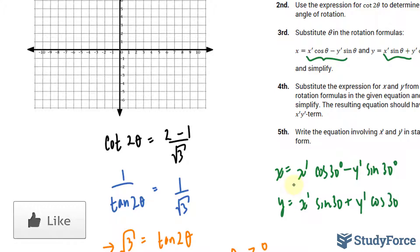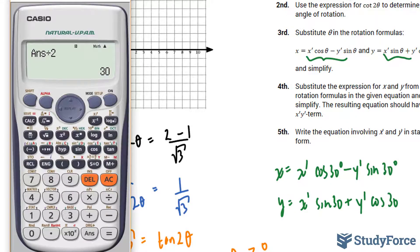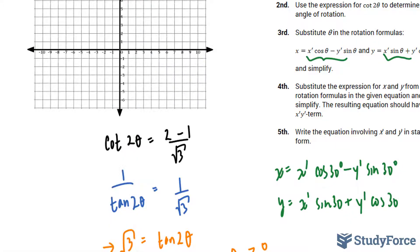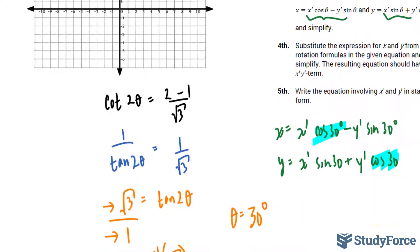You can use special triangles to evaluate what cosine and sine at 30 are. But I'll just use my calculator. We have cosine at 30. That's equal to the square root of 3 over 2. So wherever you see cosine 30, you'll replace it with the square root of 3 over 2. Let's go ahead and do that.